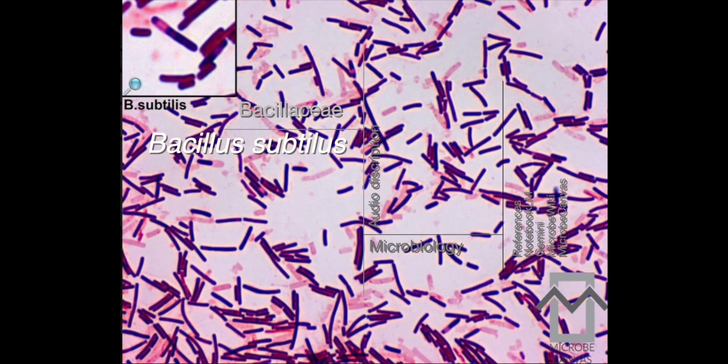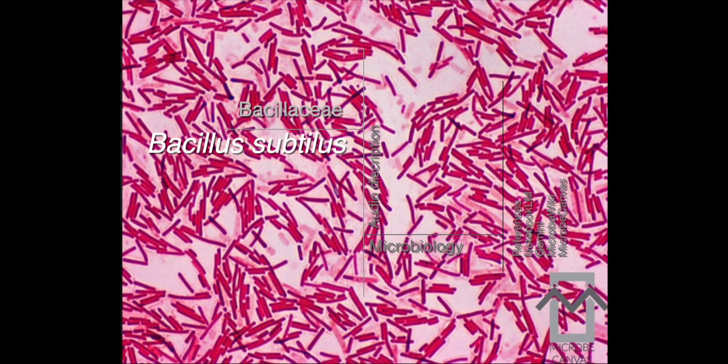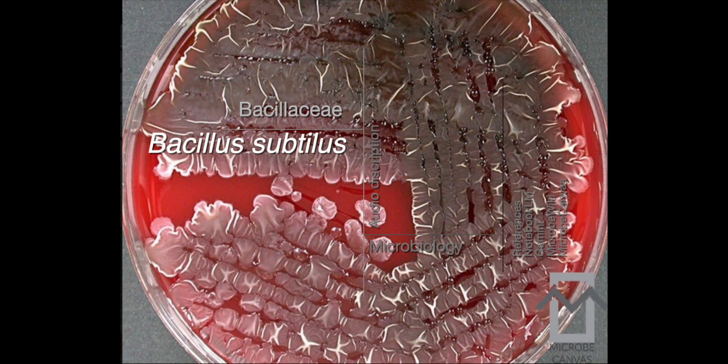Let's switch to some basic lab characteristics. Gram stain: Bacillus subtilis is gram-positive and will stain purple. On standard nutrient agar, you typically see medium-sized colonies — usually round, opaque, and a whitish or gray-white color.